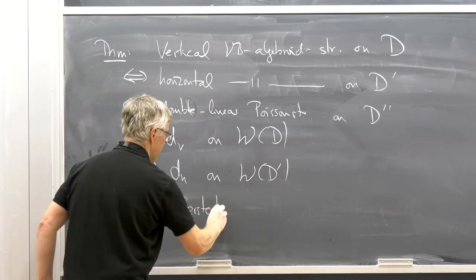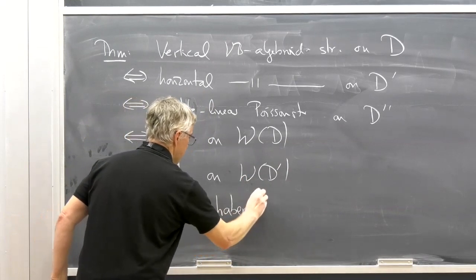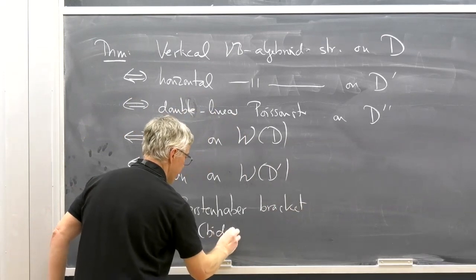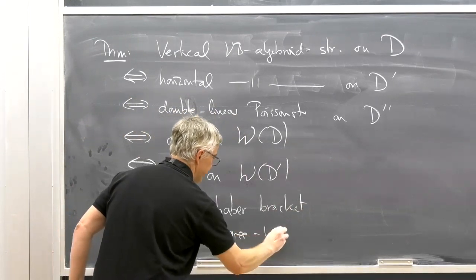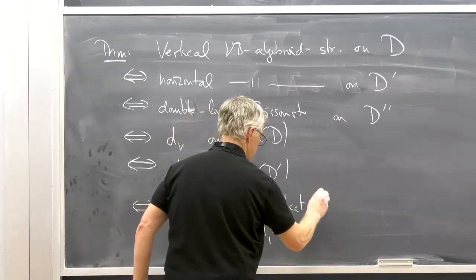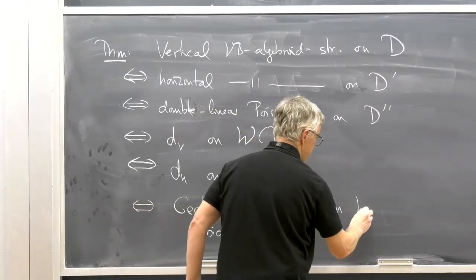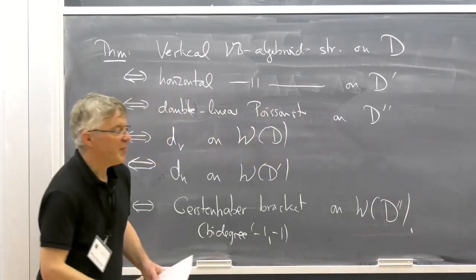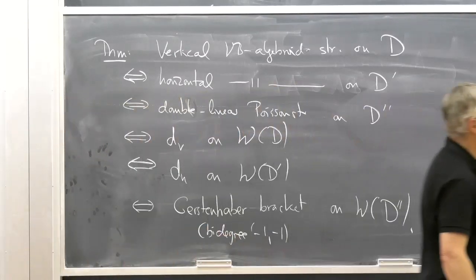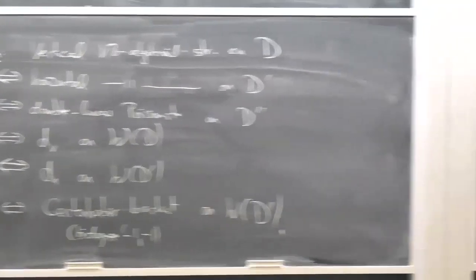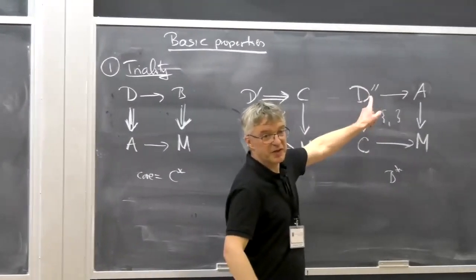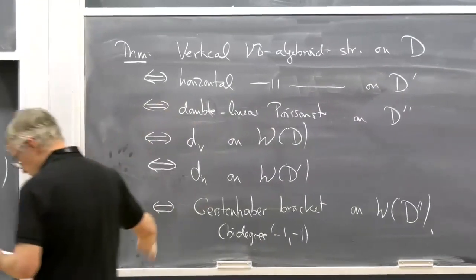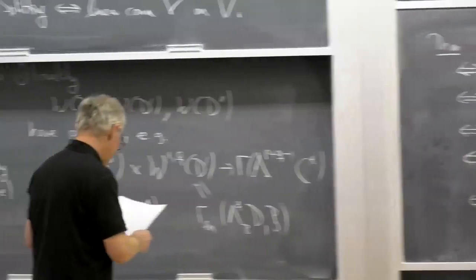It's also equivalent to having a vertical differential on the Weil algebra corresponding to D — a differential of bi-degree (1,0) — or equivalently a horizontal differential on D-prime, or equivalently a Gerstenhaber bracket of bi-degree (-1,1). All these are ways of understanding the same structure.